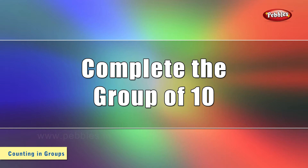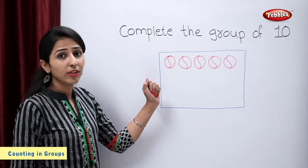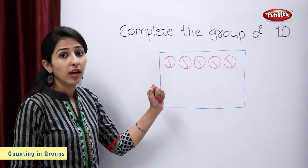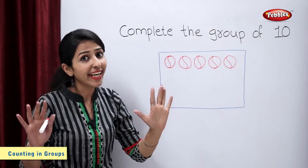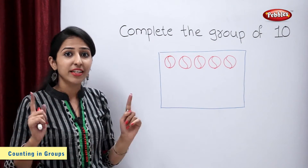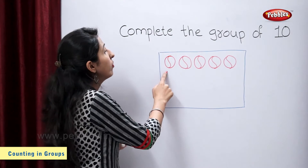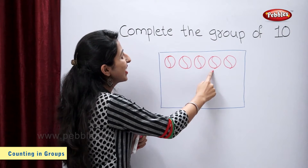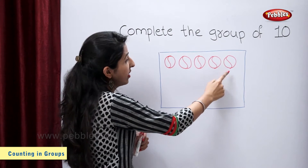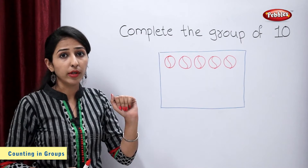Complete the group of 10. There are some balls on the board. We have to complete the group of 10. So let's count the number of balls: 1, 2, 3, 4 and 5. So there are 5 balls on the board.